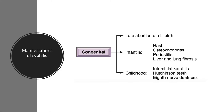Treponema pallidum may also be transmitted across the placenta from an infected mother to the fetus at any time during pregnancy, leading to congenital syphilis. The likelihood of transmission is greatest during the early stages of disease, when spirochetes are most numerous. Because severe manifestations of maternal disease may be subtle, routine serologic testing for syphilis is mandatory in all pregnancies. The stigmata of congenital syphilis typically do not develop until after the fourth month of pregnancy. In the absence of treatment, as many as 40% of infected infants die in utero, typically after the fourth month.